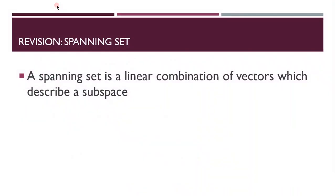So all a spanning set is, is a linear combination of vectors which describe a subspace. It does not need to get any more complicated than that.